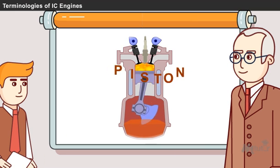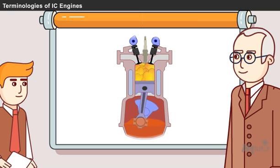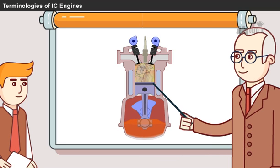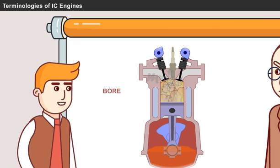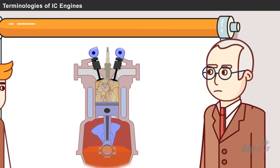It is called as piston, sir. Good. Now, tell me, what is this? It is the diameter of the cylinder and it is called as bore. Ah, yes, bore. Okay, leave it.